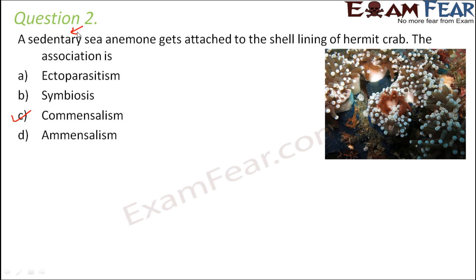A sedentary sea animal is immobile — it stays at one place. When it attaches to the shell of a hermit crab, which is free-swimming, the sea animal gains a portable home. This portable home allows the sea animal to move from place to place and search for more food, which is a clear benefit.